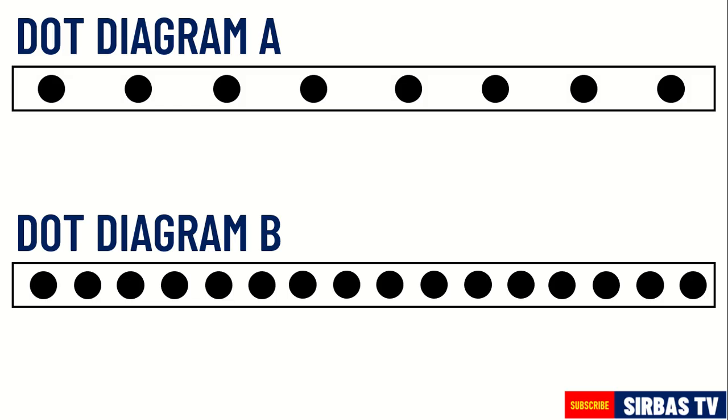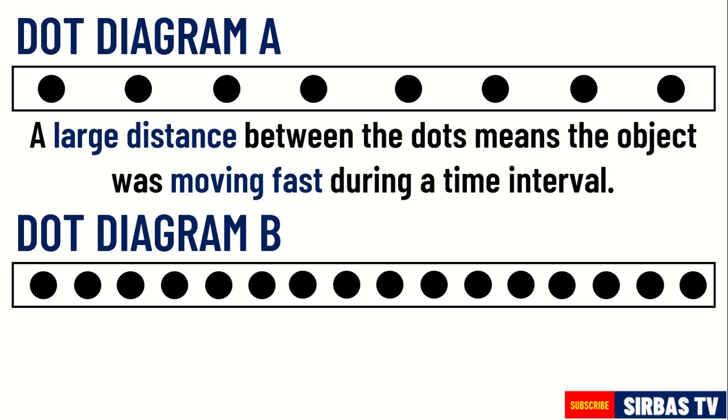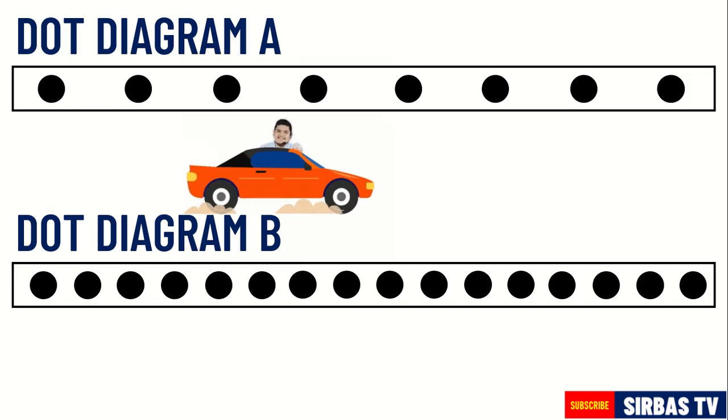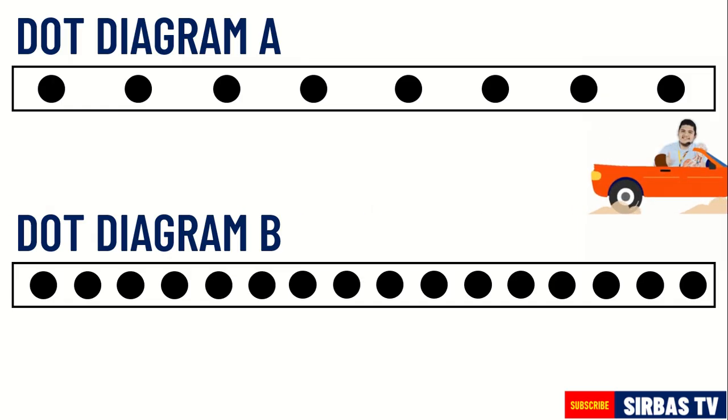But what does this mean? A large distance between dots means the object was moving fast during a time interval. Therefore, the object in dot diagram A is moving fast.